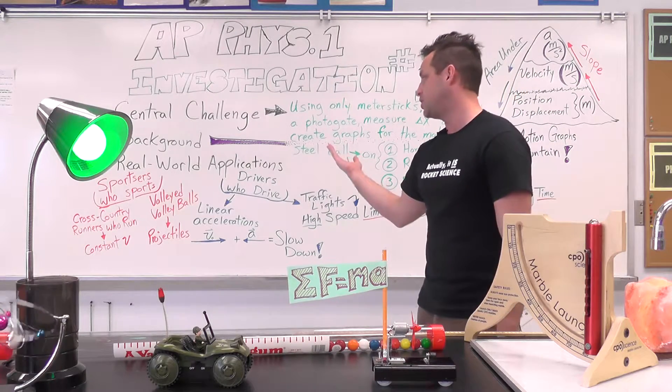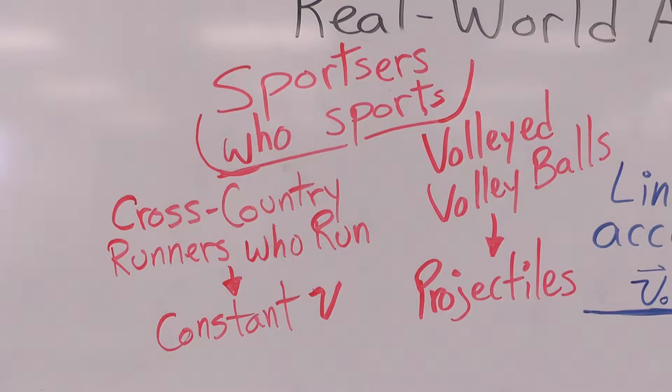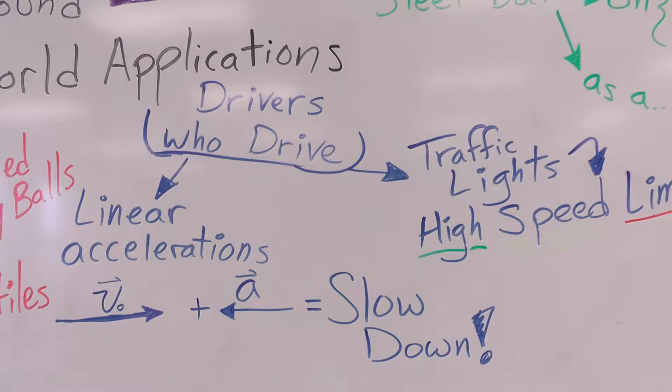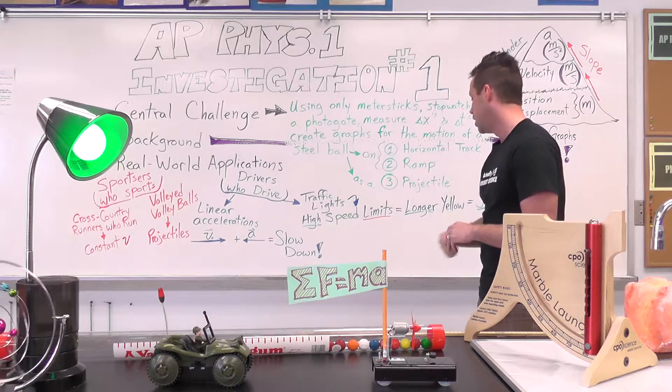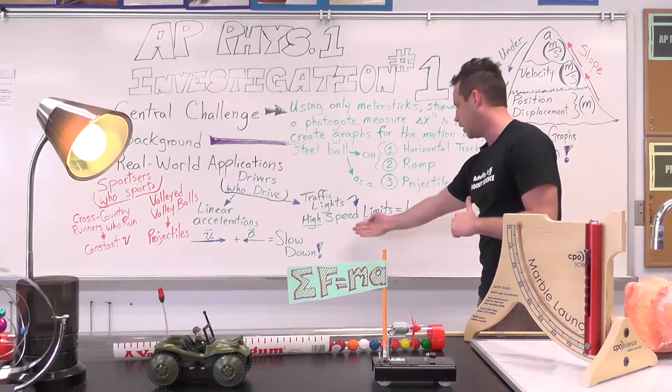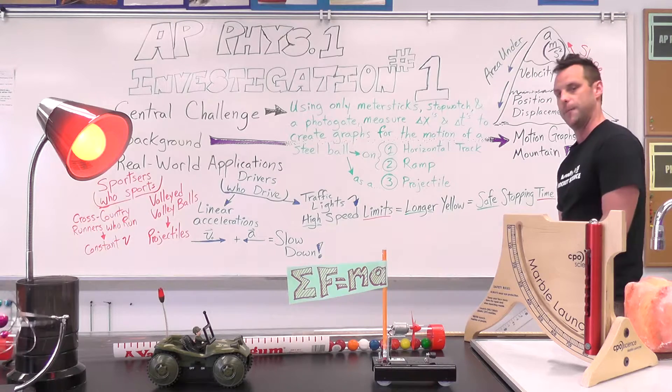Some real-world applications mentioned by the College Board are in sporting, you have cross-country runners. They are a good illustration of constant velocity. And then in traffic with cars, you have linear accelerations happening all the time, speeding up, slowing down. And then with traffic lights, civil engineers actually have to make a longer yellow light in the area of high speed limits so that you have a safer stopping time.